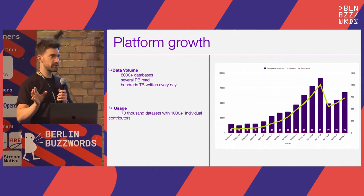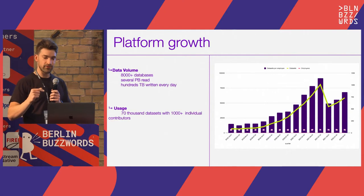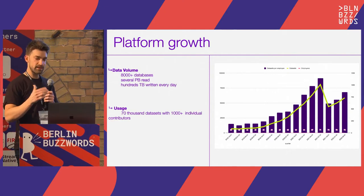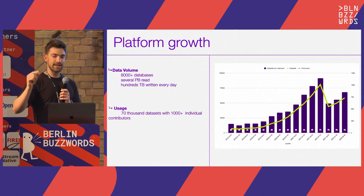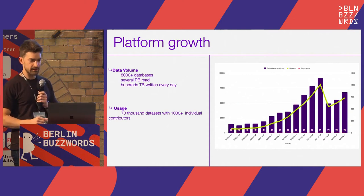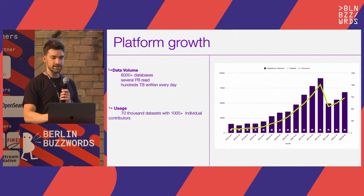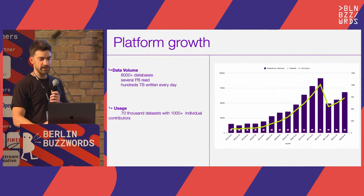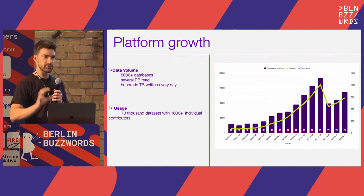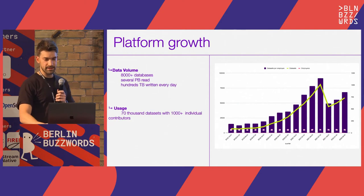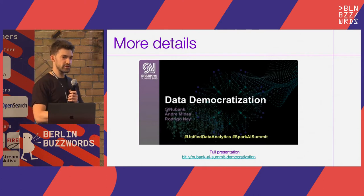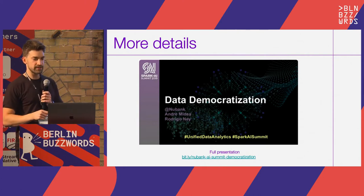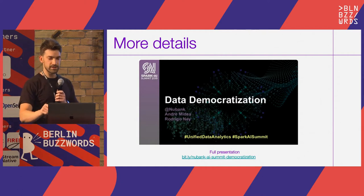The graph on the right shows a very interesting pattern of the team being effective as it grows in number of datasets — we don't need to hire as many people; the number of people hired doesn't scale linearly with the number of datasets included. Nowadays we have 70,000 datasets with more than a thousand individual contributors. We gave a presentation with much more technical detail of the choices we made at Spark Summit and AI Summit.